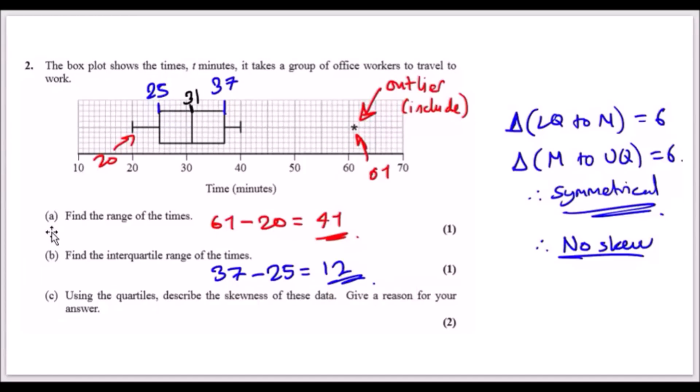Part c: using the quartiles, describe the skewness of the data and give a reason. To describe skewness, look at the shape and ask yourself how close the median is to the lower and upper quartile. I found the change between the lower quartile to the median, which was 6, and the change between the median and the upper quartile, which was also 6. If you get the same result, it is symmetrical. Otherwise, if the upper quartile was greater, it would be rightly skewed. If it was the other direction, it would be negatively skewed. This is simply no skew.